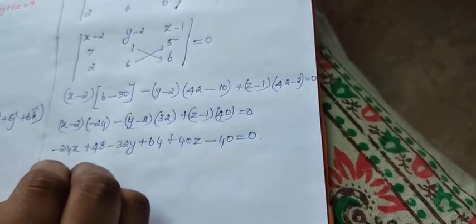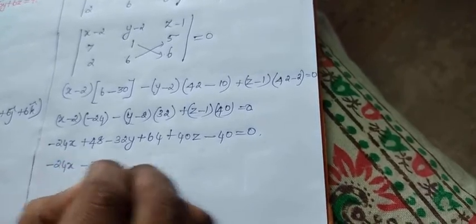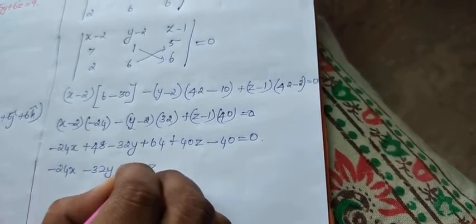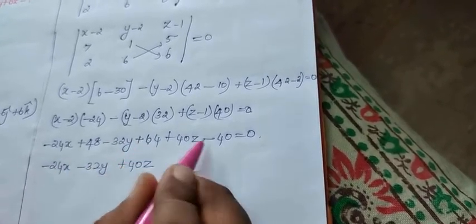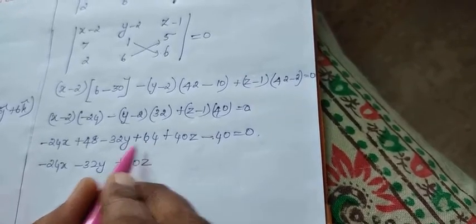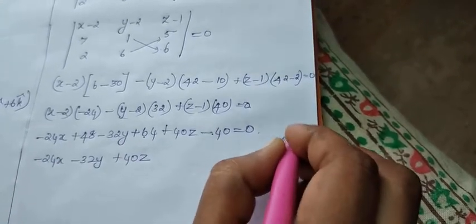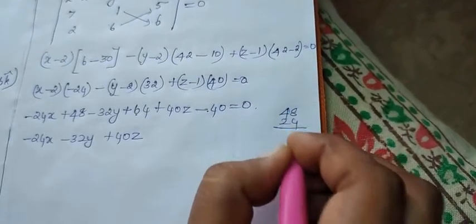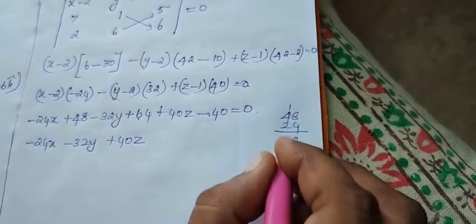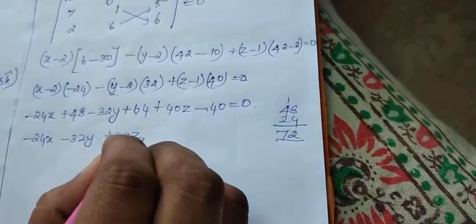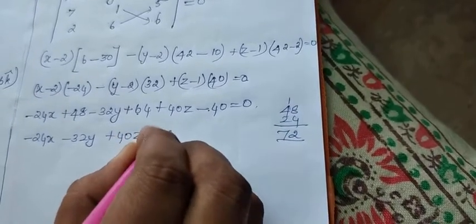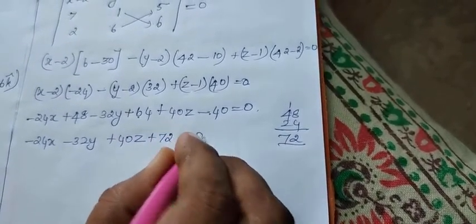What is our answer? Minus 24x minus into minus plus (24 into 2 is plus 48) minus 32y plus (2 into 32 is 64) plus 40z minus 40 equal to 0. So minus 24x minus 32y plus 40z. Now (64 minus 40), our answer is plus 24. So (48 plus 24), our answer is 72. So plus 72 is equal to 0.